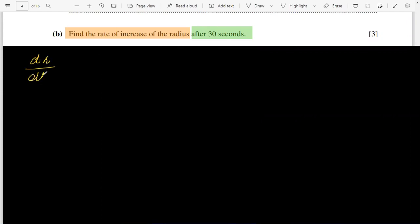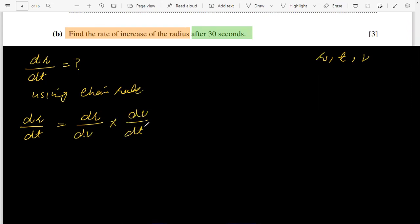dr/dt is required because examiner is saying find the rate of increase of radius. And now we have three variables in this overall problem, and these are radius, time, and V. So using chain rule, dr/dt that will be dr/dV times dV/dt.